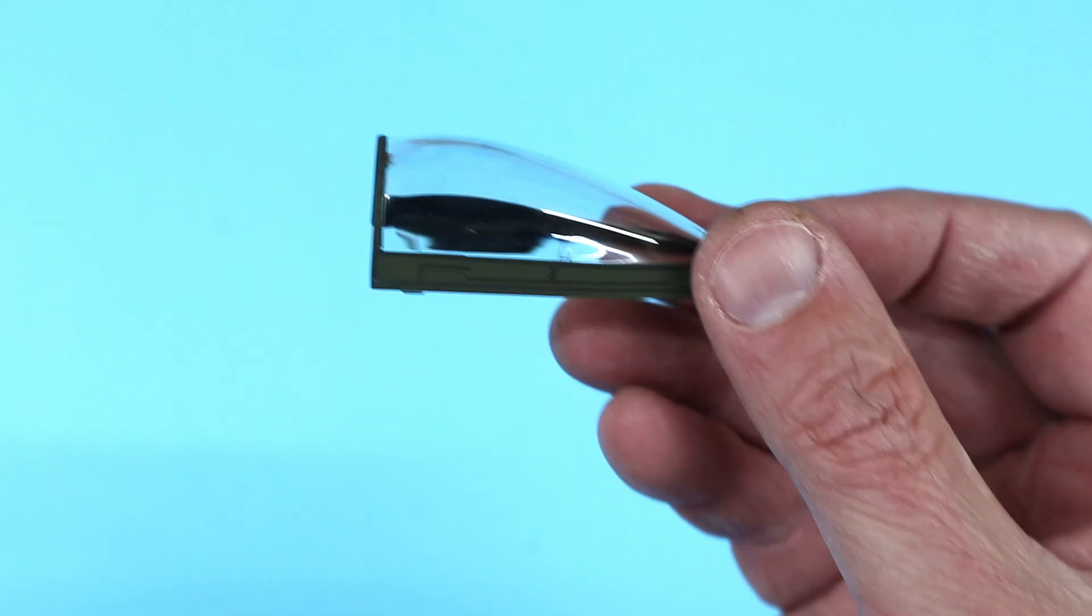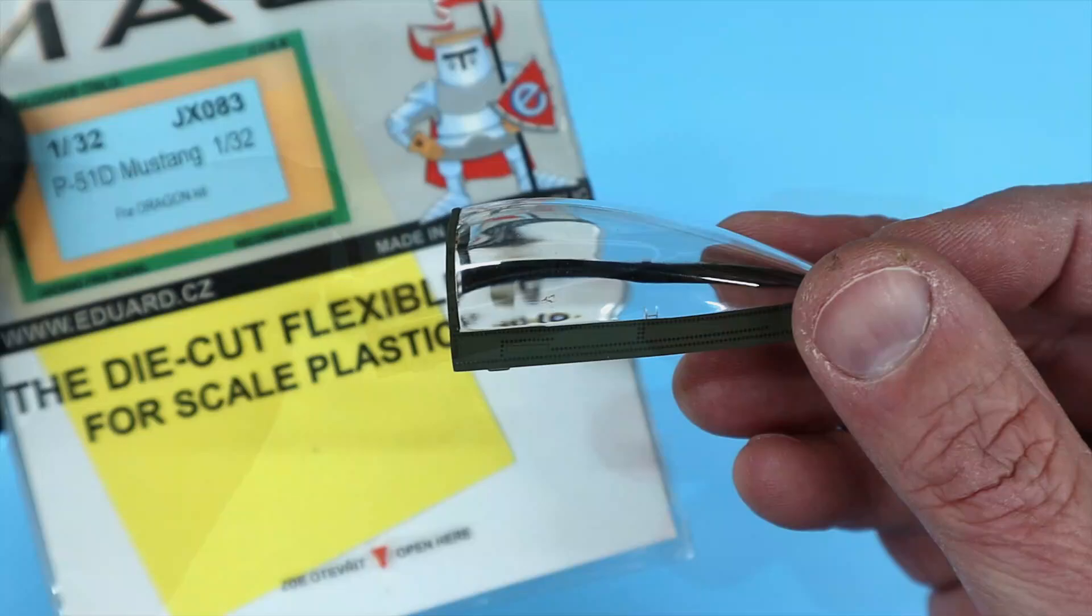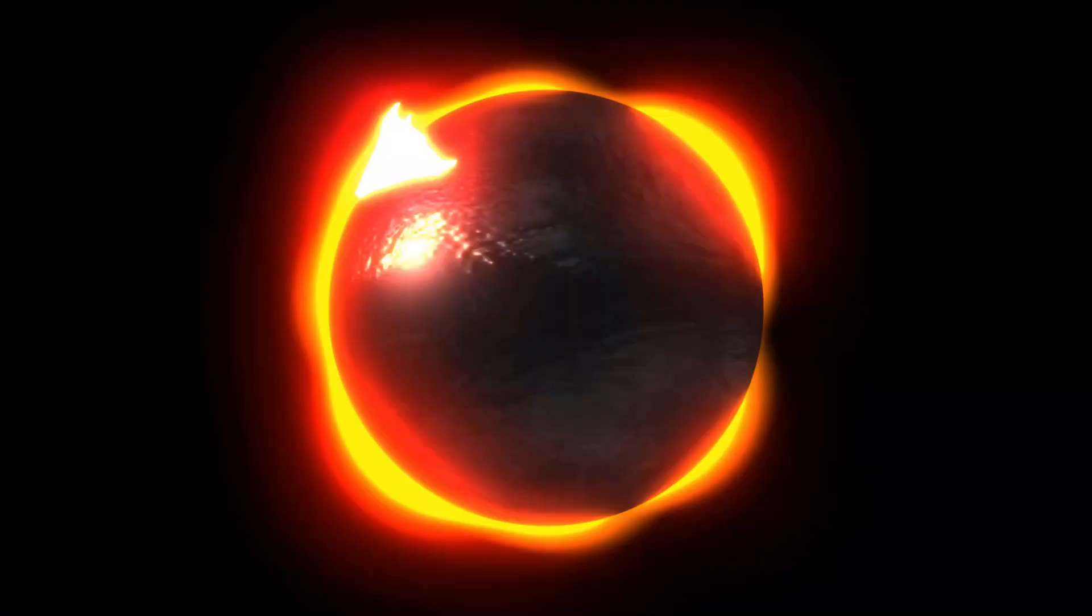Masking canopies can make a world of difference in the final look of your airplane models. Eduard and other companies offer mask sets for many of the models on the market today. But do you have to buy them to be able to mask your own canopies? Of course not!